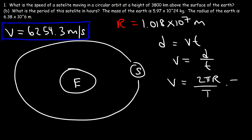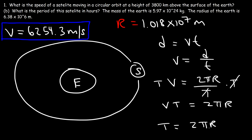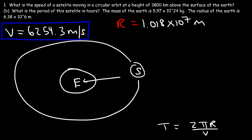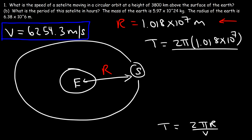Solving for t: multiply both sides by t to get vt equals 2πR, then divide both sides by v, giving the period T equals 2πR over v. We have the R value — 1.018 times 10 to the 7 — so the period is 2π times 1.018 times 10 to the 7, divided by the speed of 6,254.3 meters per second. You should get 10,227 seconds.